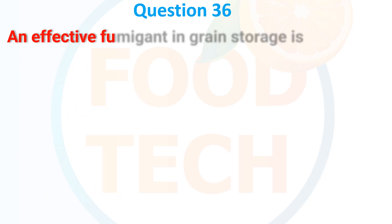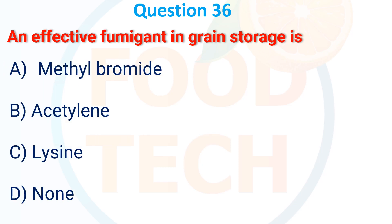Question 36. An effective fumigant in grain storage is: A. Methyl bromide. B. Acetyl. C. Lecithin. D. None. The correct answer is methyl bromide.